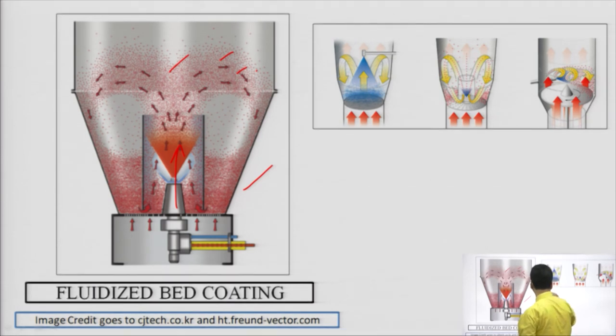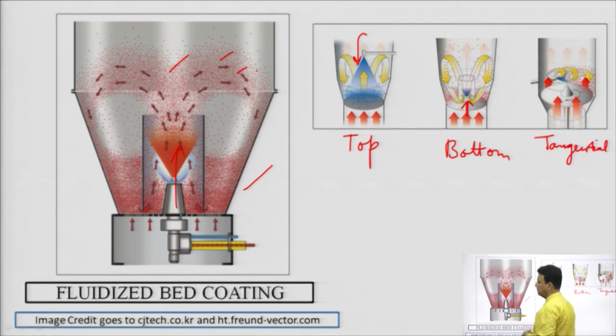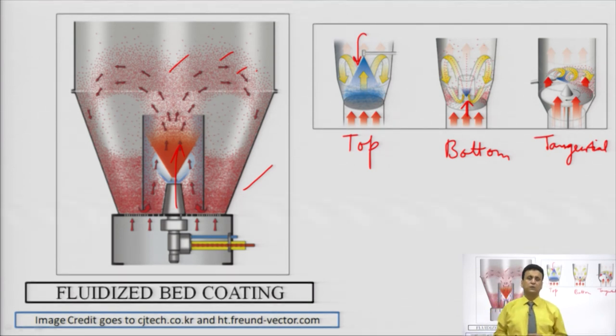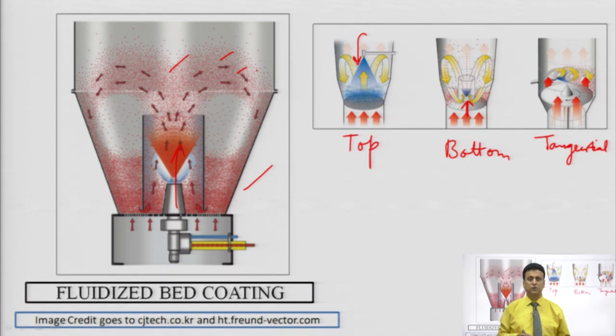These are modifications of the fluidized bed coating equipment: top spray (spraying from the top), bottom spray (spray from the bottom), and tangential spray. In this video I have discussed what is coating, the various types — sugar coating, film coating, and compression coating — polymers used and other components like plasticizers, solvents, and colouring agents, and the equipment used for tablet coating like coating pan and fluidized bed coating machine. Thank you so much.